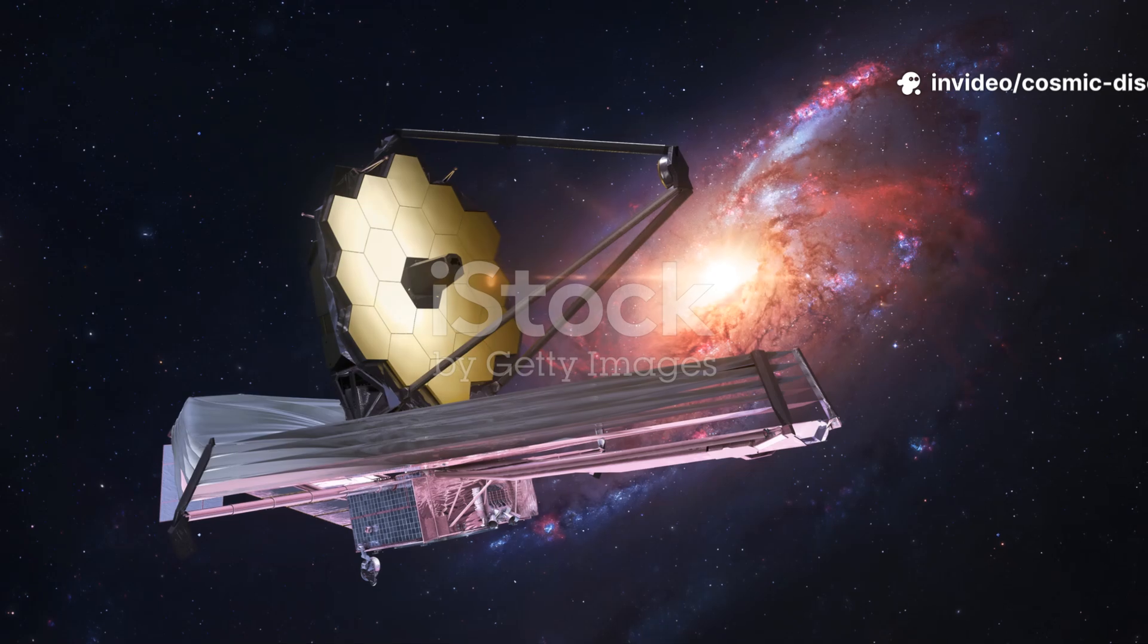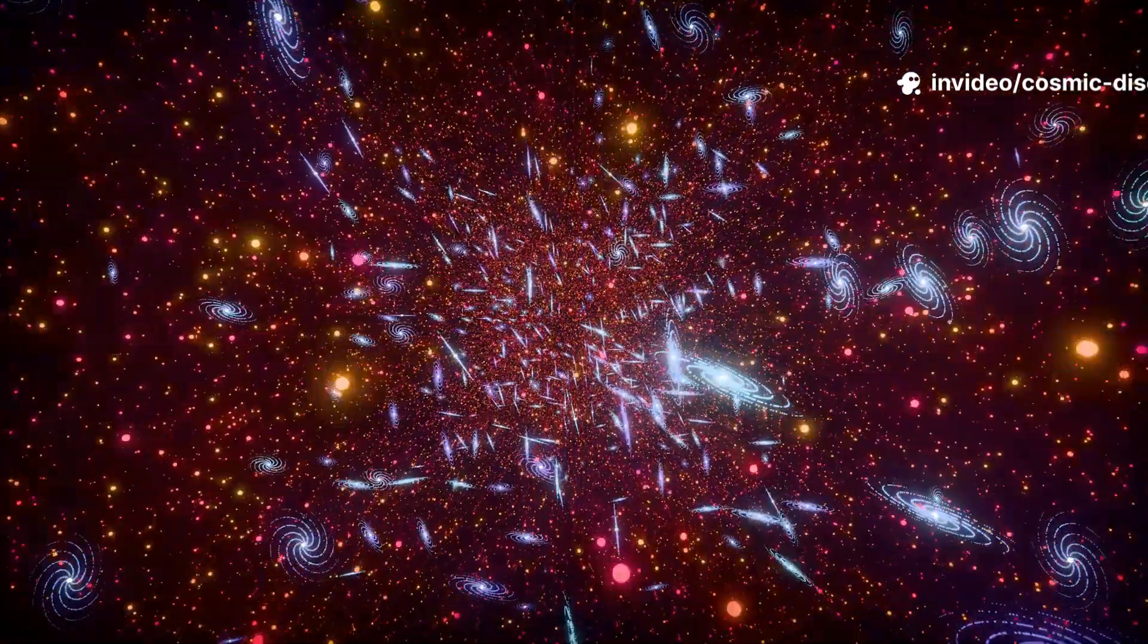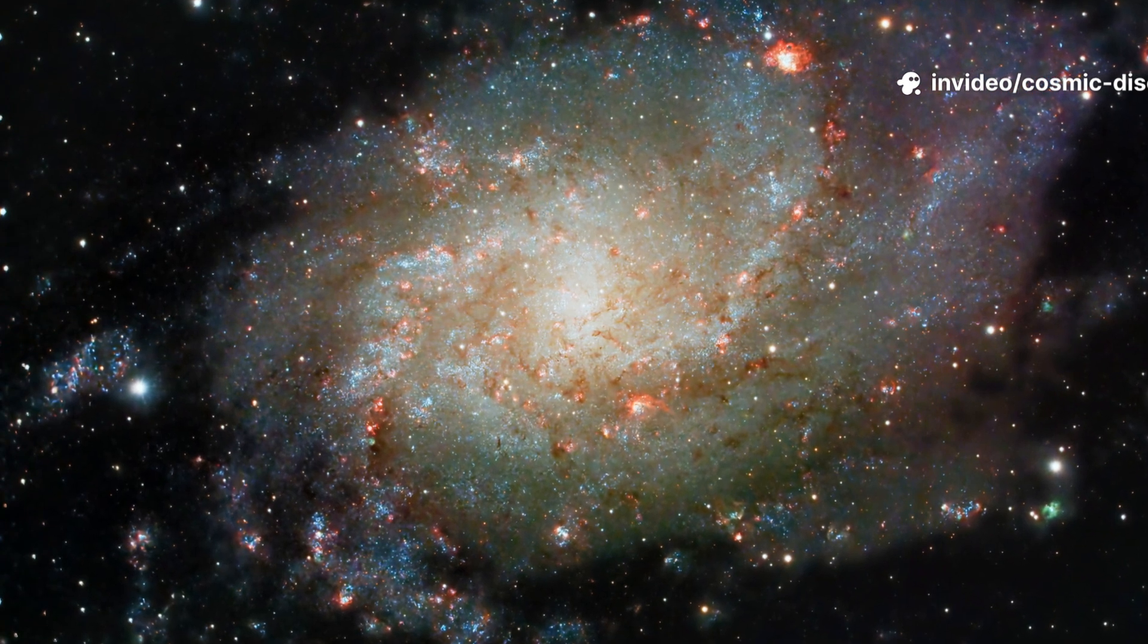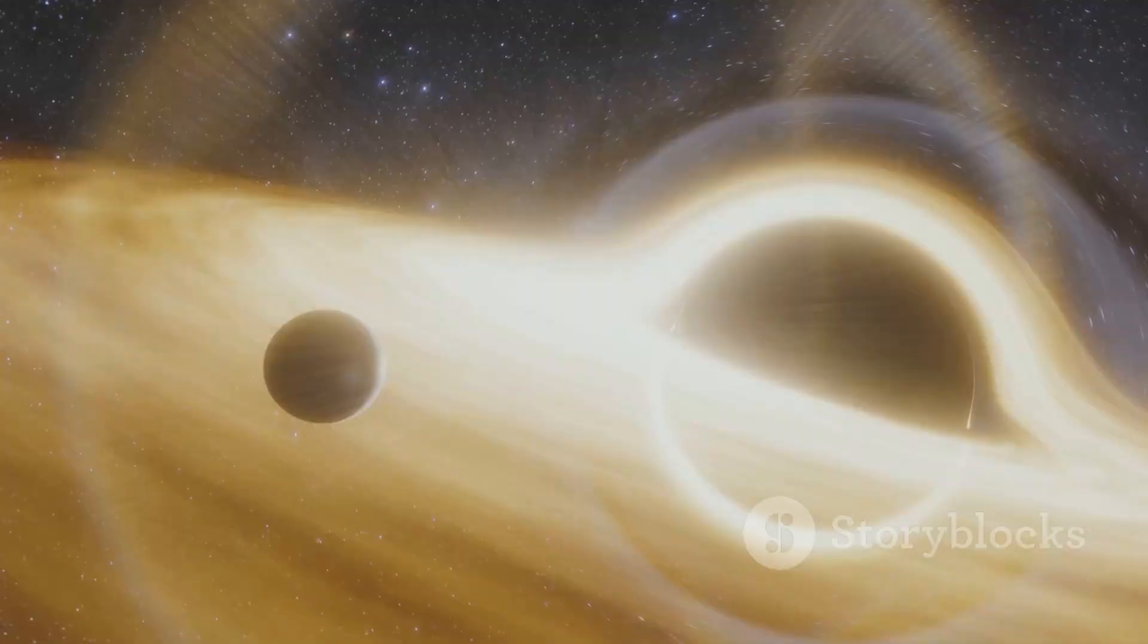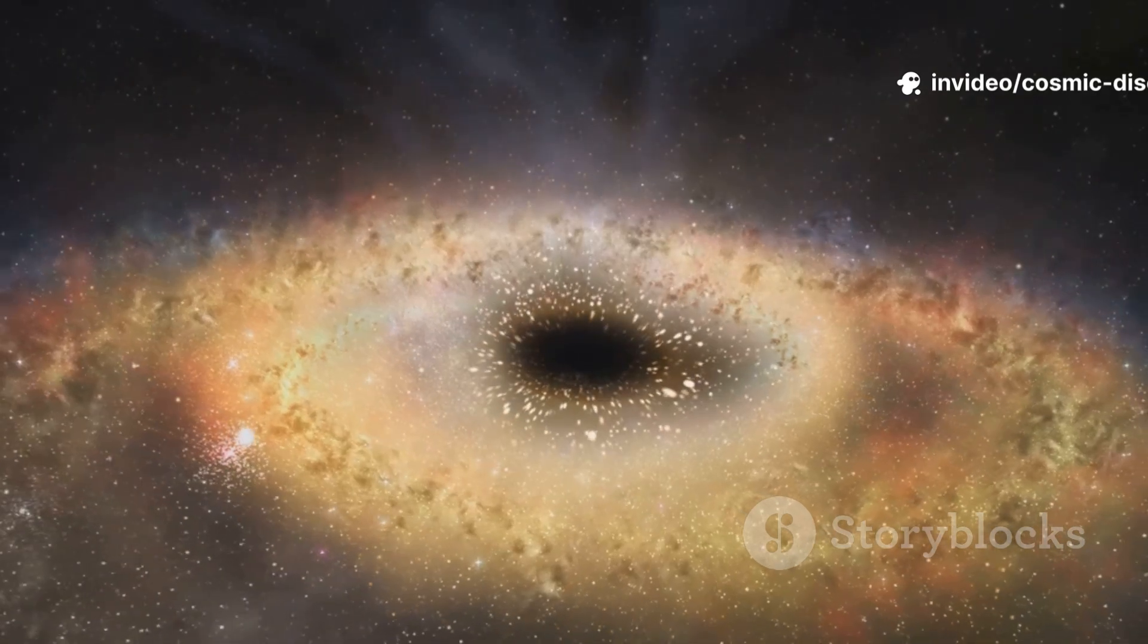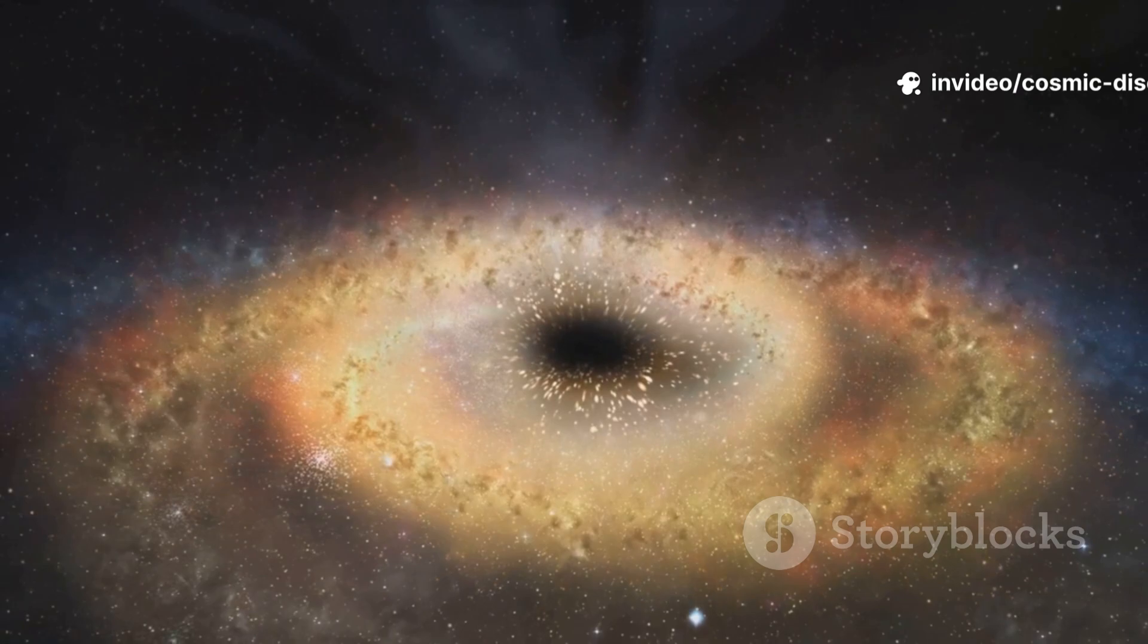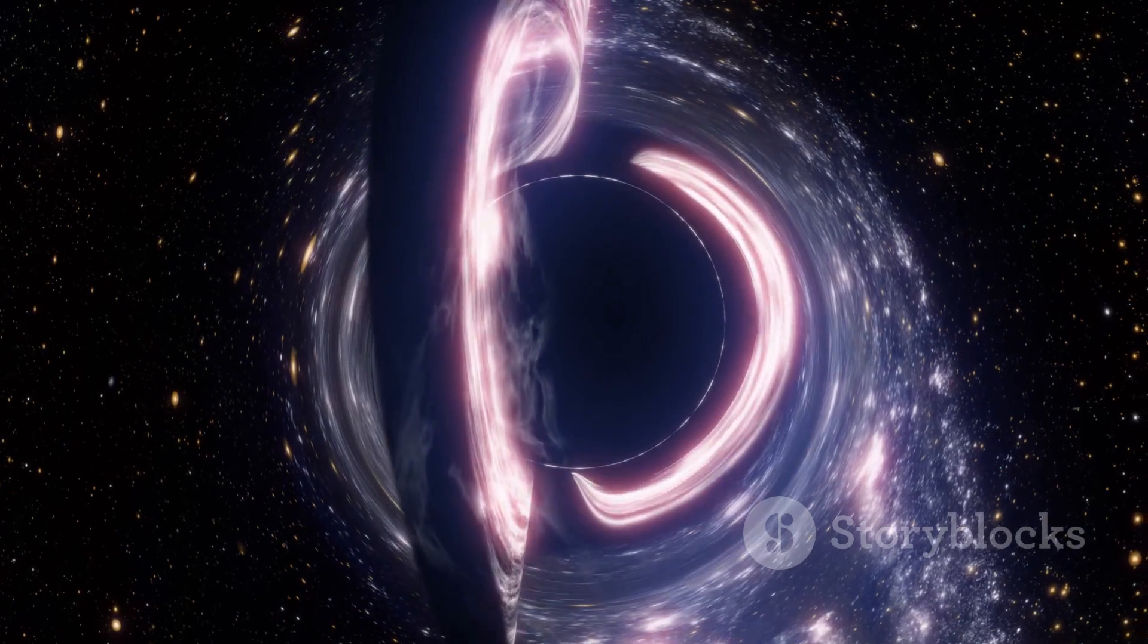Pointing infrared telescopes at the galactic center revealed a breathtaking scene. Instead of darkness, we found a dense cluster of millions of stars moving at incredible speeds. At the very center, stars whip around an invisible force, evidence of a supermassive black hole, Sagittarius A*. This monster is over four million times the mass of our sun, packed into a single point.